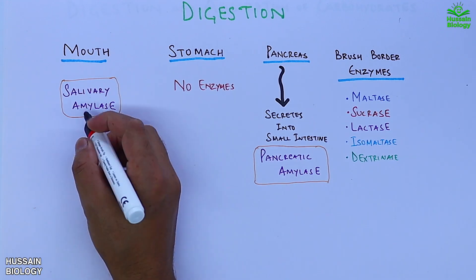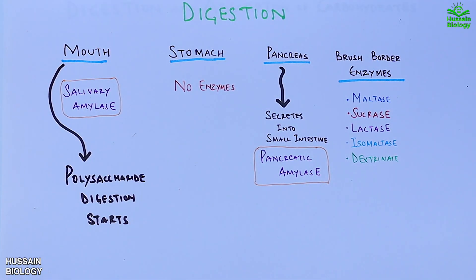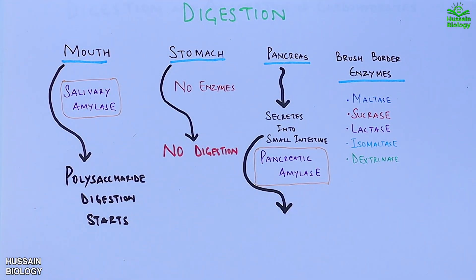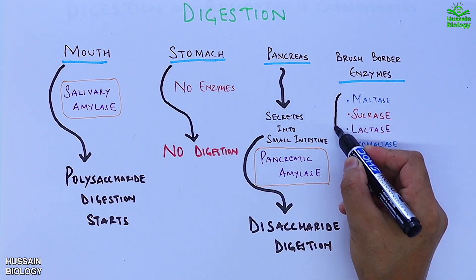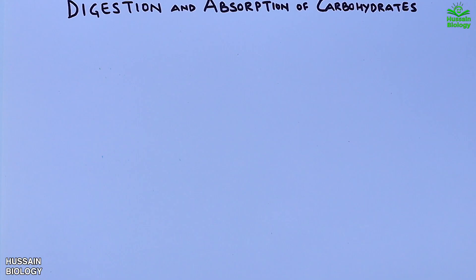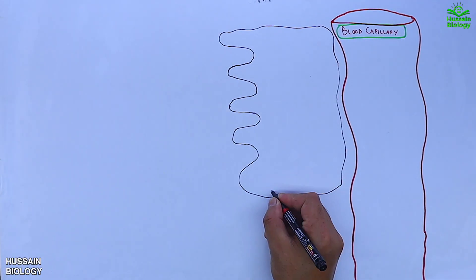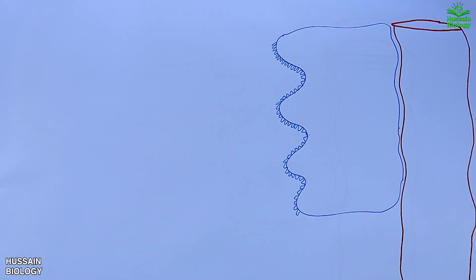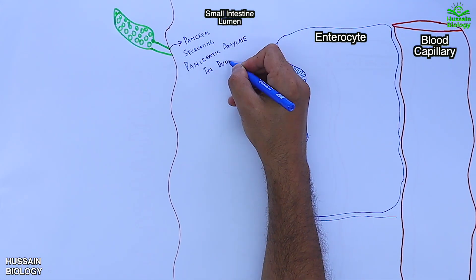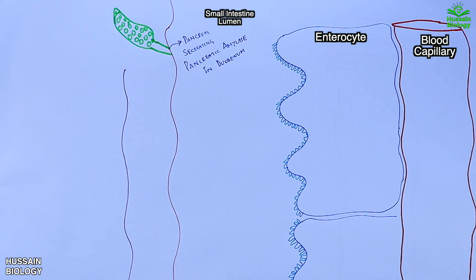Digestion starts from the mouth — specifically polysaccharide digestion begins there. In the stomach there is no action on carbohydrates. Then in the small intestine, disaccharide digestion is mediated. In this diagram we have the blood capillary, followed by enterocytes with brush border morphology towards the intestinal lumen. At the duodenum, the pancreas secretes pancreatic amylase into the small intestine.